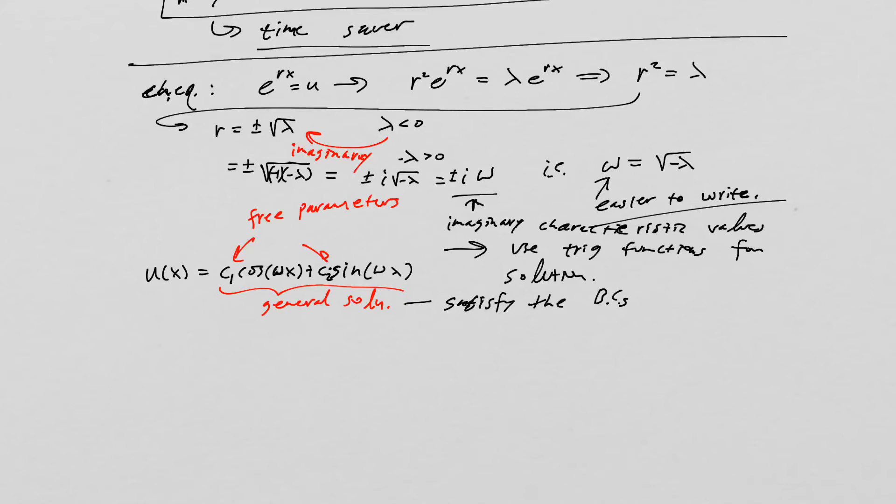So to do that, we need to look at those boundary conditions. So let's say we know our first boundary condition is u at pi is equal to zero and u prime at zero is equal to zero. Let's look at this one first. u prime of x is equal to negative omega times c1 sine omega of x plus omega times c2 of cosine omega of x.